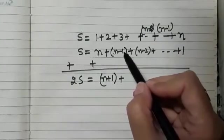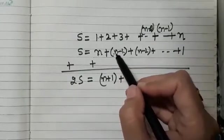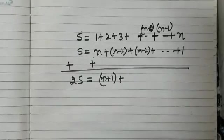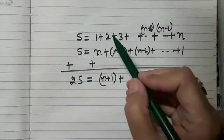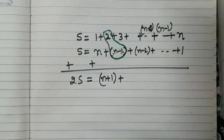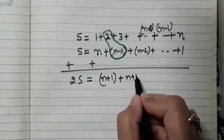now n minus 1 plus 2. I am repeating, n minus 1 plus 2, this block. This is the pair of second term. Yes, when we add, we get n plus 1.